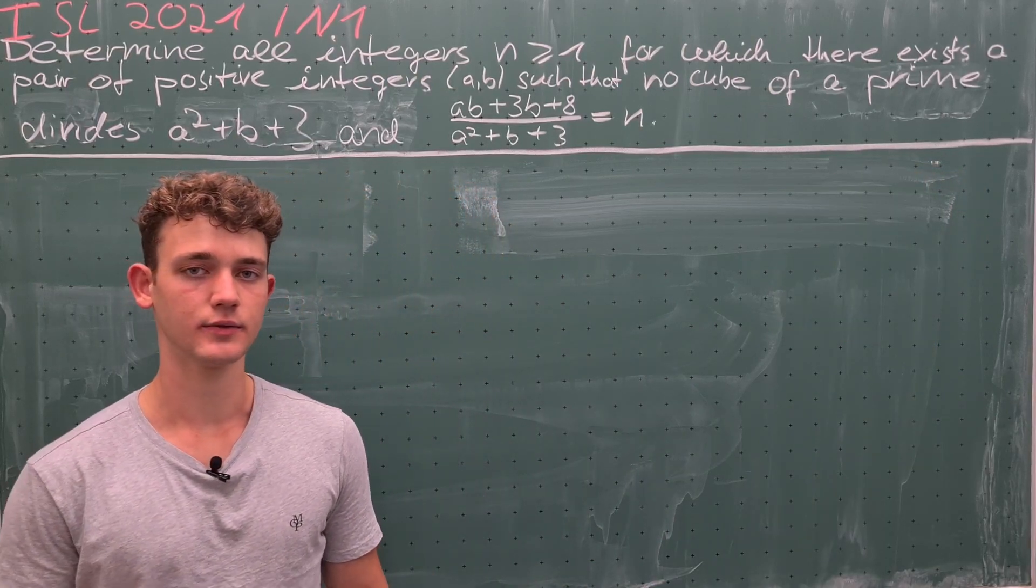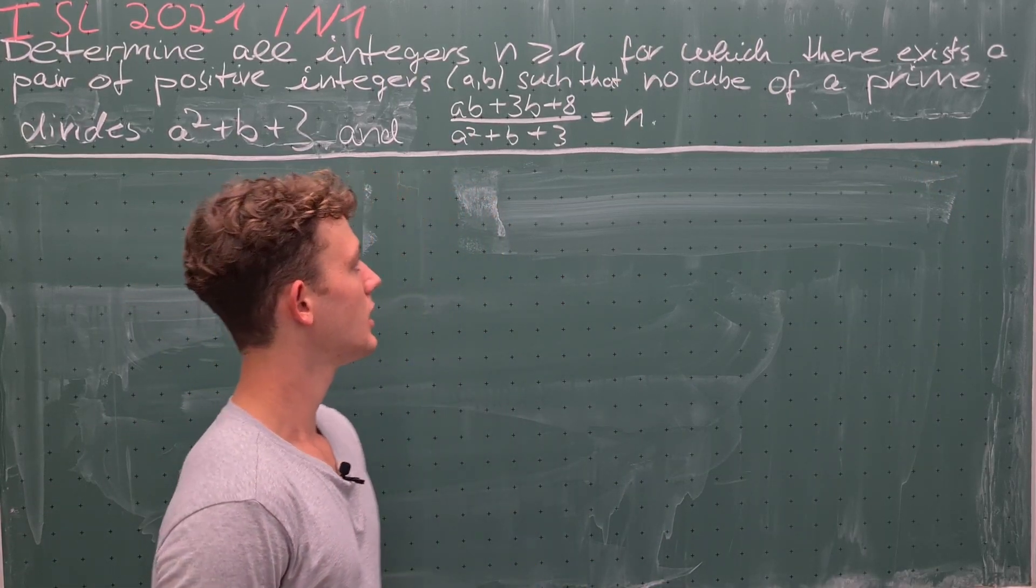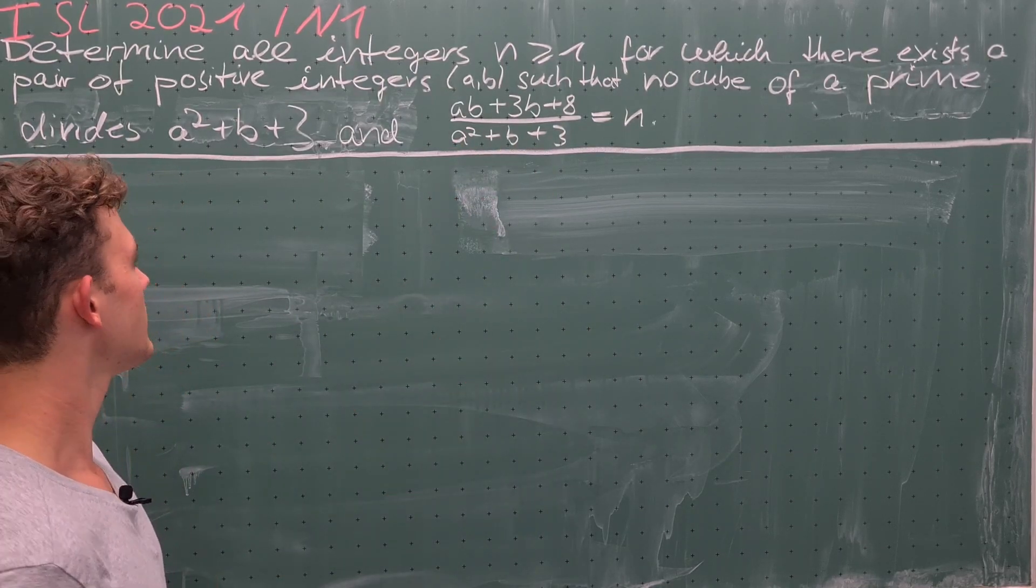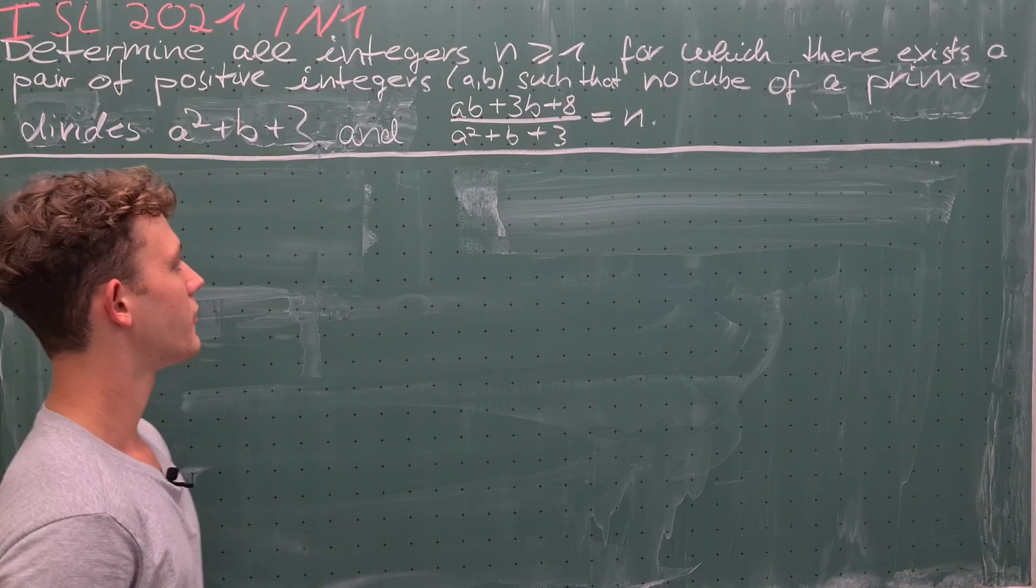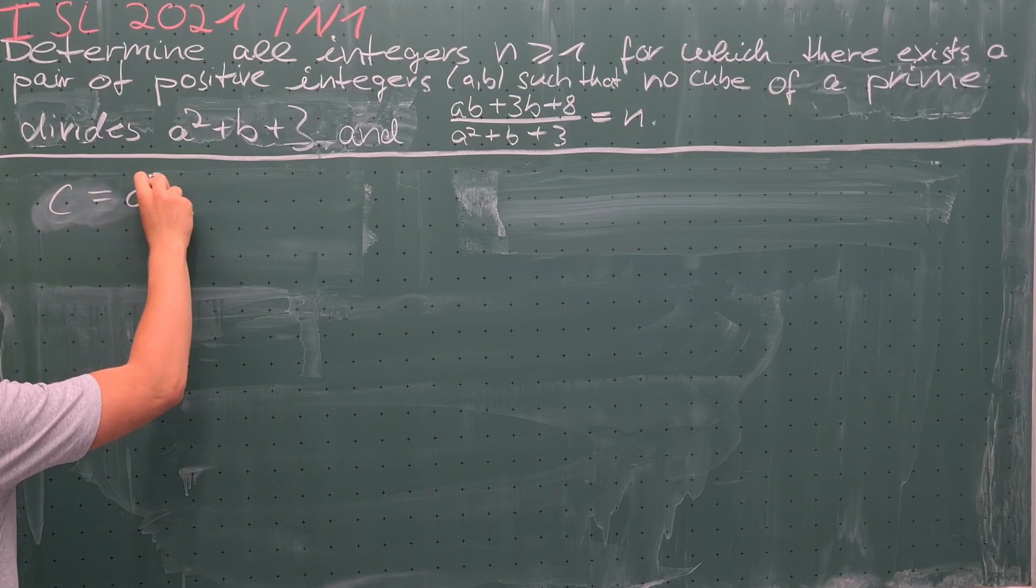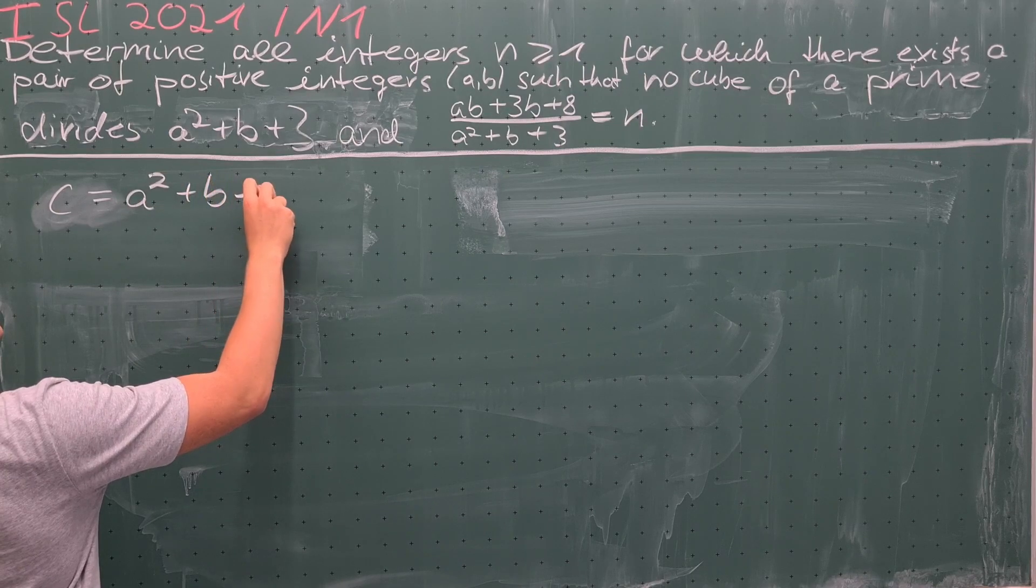This statement motivates us to make a substitution, because we see that this expression in the denominator of the fraction equals that one. Therefore, we substitute c = a² + b + 3.